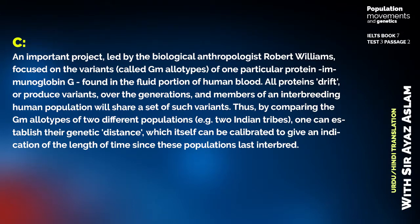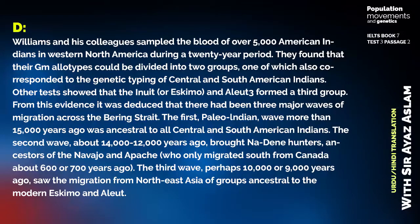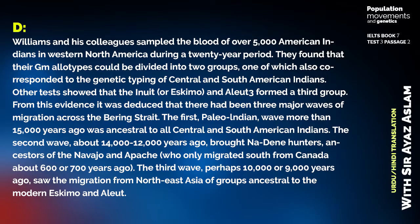William and his colleagues collected blood samples from five thousand American Indians in western North America over a twenty-year period. They found that their GM allotypes could be divided into two groups, one of which also corresponded to the genetic typing of central and southern American Indians. Other tests showed that the Inuit and Aleut formed a third group.